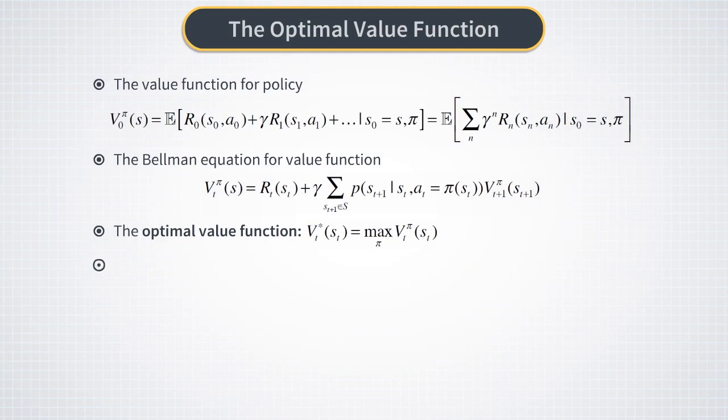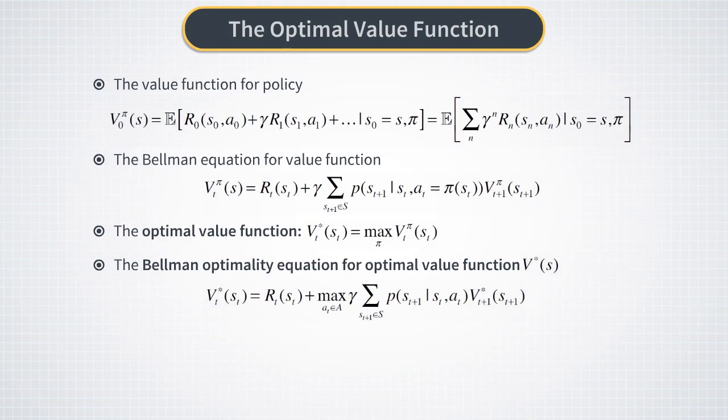We can express the optimal value function in terms of itself, similarly to how we derive the Bellman equation for a value function with a fixed given policy pi. Formally, it can be done by simply applying the max operator to both sides of the Bellman equation. Then in the left-hand side we will have V star by definition, while in the right-hand side we will have the same optimal value function at the later time.